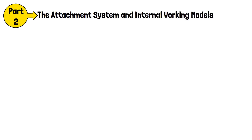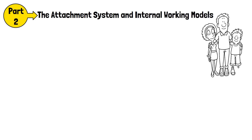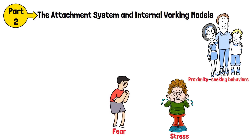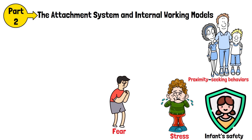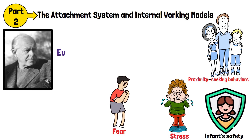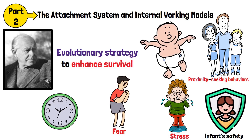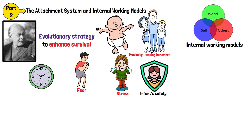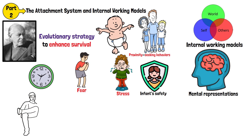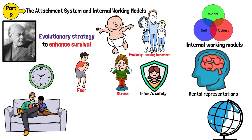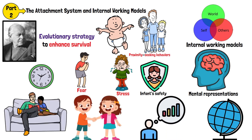Part 2 – The Attachment System and Internal Working Models. The attachment system operates through proximity-seeking behaviours, triggered by stress or fear, ensuring the infant's safety. Bowlby categorised these behaviours as part of an evolutionary strategy to enhance survival. Over time, infants develop internal working models — mental representations of themselves, their caregivers, and the world — which influence expectations and interactions throughout life.